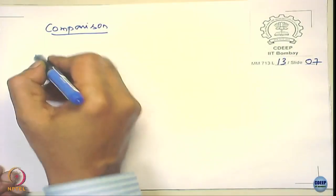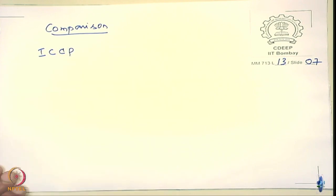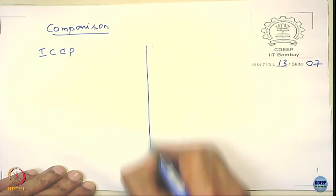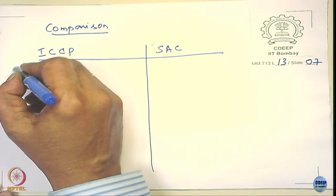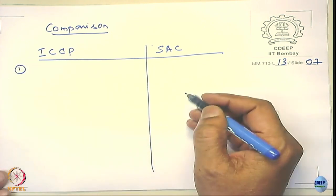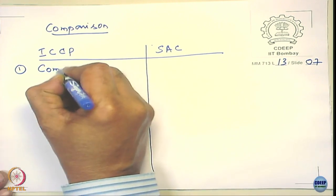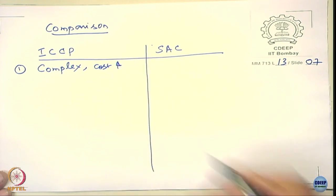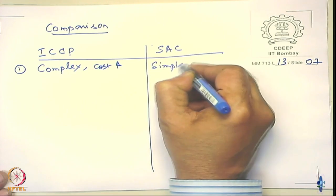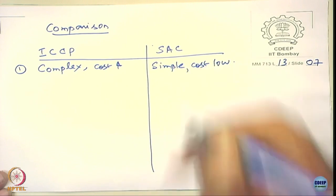Let us now compare the impressed current cathodic protection (ICCP) system with the sacrificial anode cathodic protection system. ICCP is a complex system requiring a rectifier and monitoring equipment — in practice it involves complicated feedback systems — and it is costly. The sacrificial anode system is simple and low cost.